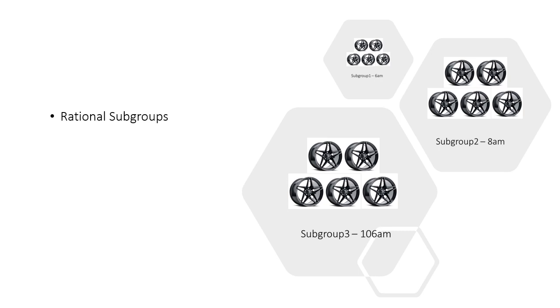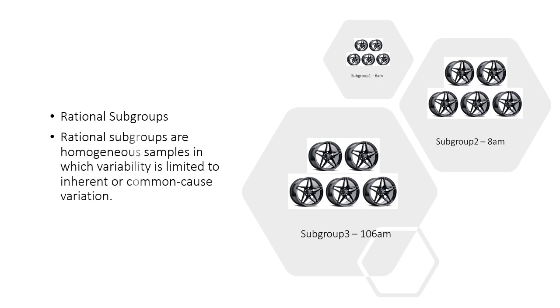To see common cause variation in the process, we need data that are as free from unusual sources of variation as possible. This can be accomplished by collecting subsets of data under conditions that are as similar as possible. We call these rational subgroups because they limit variability to the inherent variation in the process.